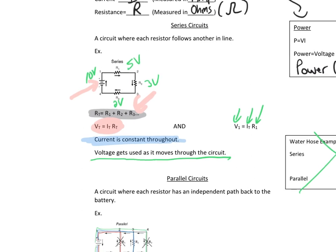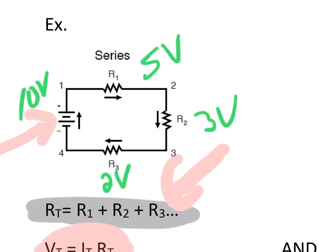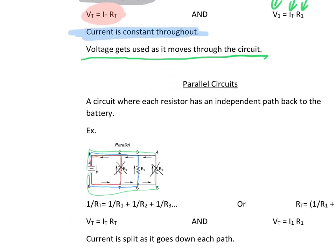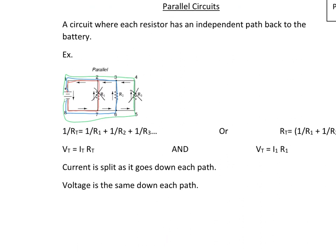On a series circuit, if I break R1, the rest of them stop working. If I break R3, the rest of them stop working — it doesn't matter which one you break, the whole series goes down. But if you break one in a parallel circuit, the others stay on. Which is why this is the way you wire your house — you don't want a light going off in the bathroom to take out the lights in your entire house. So they wire your house in parallel.